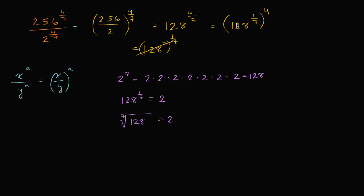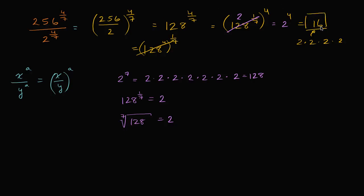So we can simplify this: 128 to the one-seventh is two, meaning our whole expression is now just two to the fourth power. Two to the fourth power is two times two times two times two, which is equal to 16. So this crazy complicated-looking expression has simplified to 16.